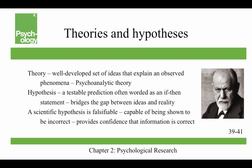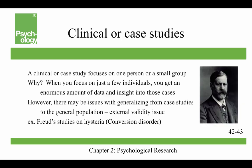A scientific hypothesis is falsifiable, which means that it's capable of being shown to be incorrect. That's a problem with Freudian theory — it's difficult to disprove it or make it falsifiable. But if a hypothesis is falsifiable, that provides us with some confidence that the information is correct.